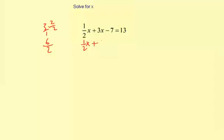So 1/2x plus 6/2 times x minus 7 equals 13. Let's add 1/2 plus 6/2, that's 7/2, and the x is still there, minus 7 equals 13.